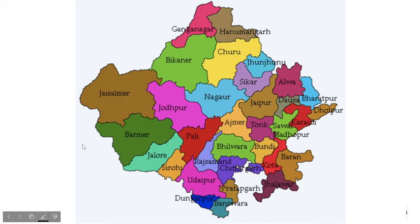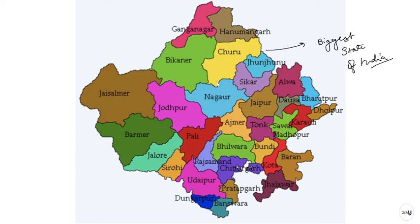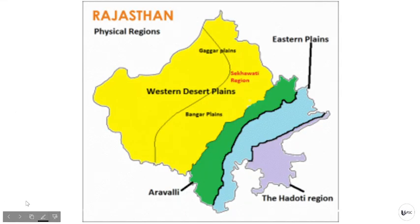When we look at Rajasthan, we see a very large land area. Because of this, Rajasthan is the largest state of India area-wise. Since it is such a large state, the physical features vary from region to region. That is why geographers have summarized all the physical features of Rajasthan and divided them into four basic categories of physical regions.